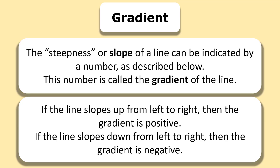To summarize: gradient is the steepness or slope of a line, indicated by a number. If the line slopes up from left to right, then the gradient is positive. If the line slopes down from left to right, then the gradient is negative.